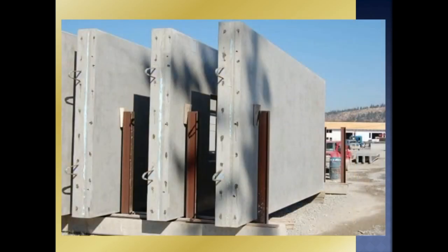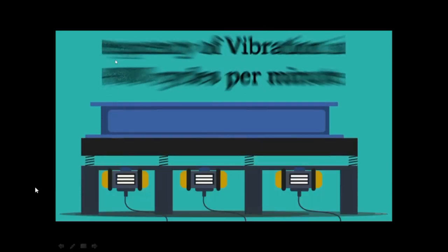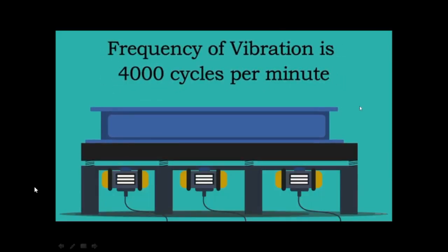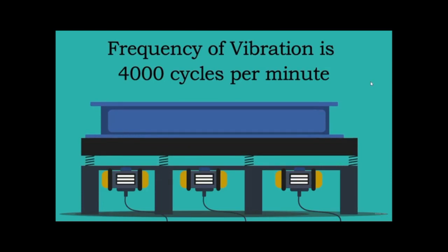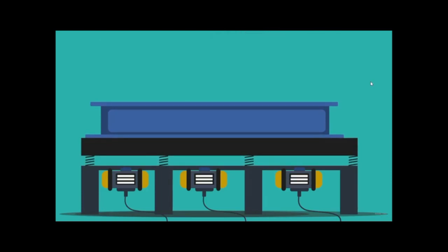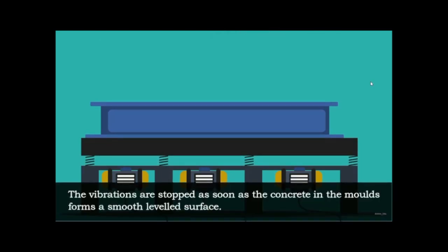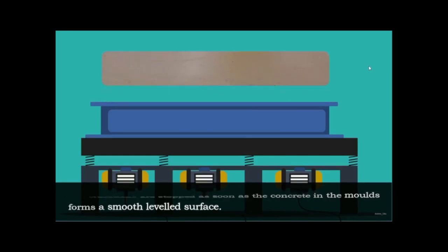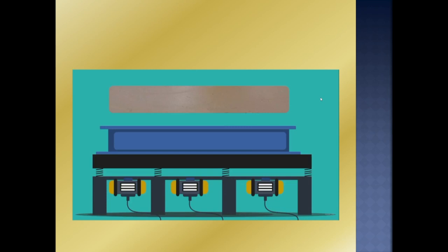We need to create vibration on the platform. In the platform vibrator, when you start to make a vibration, you will start to level the surface. When we start to see the compact version forming, we will stop the vibration. We will do this in a few minutes of operation.